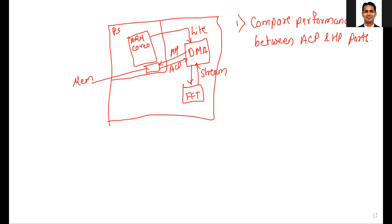In our theory lecture, we discussed the difference between the ACP and HP port. We are going to discuss it in more detail in the subsequent lecture, but in today's lab we will also discuss this difference. As we know, the HP port has direct access to the DDR memory, while the ACP port has access to the SNOOP control unit through which it can access the on-chip cache memory as well as DDR memory.